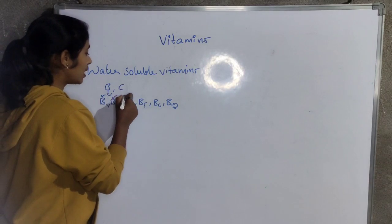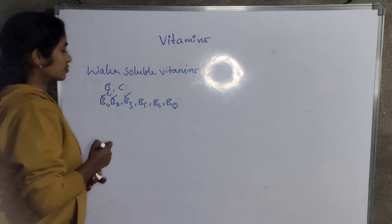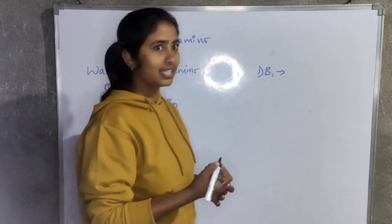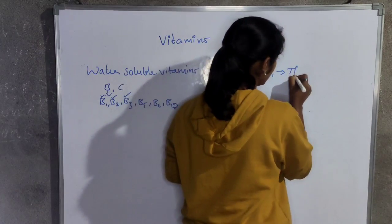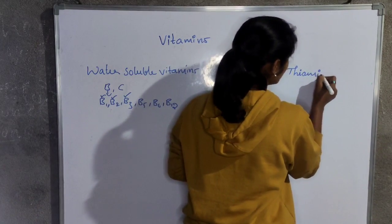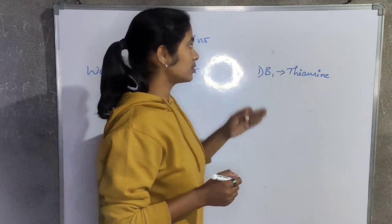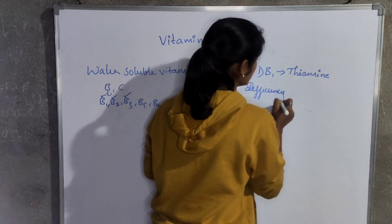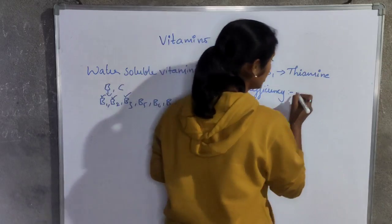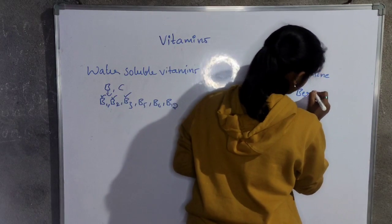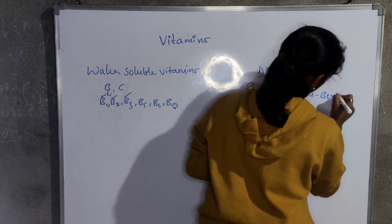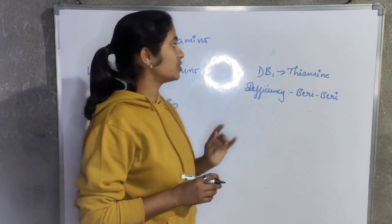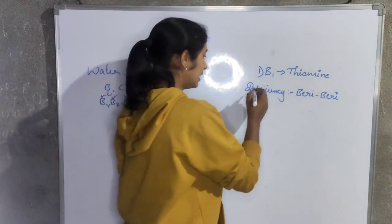Today we are going to discuss B1, B2, and B3 vitamins. First, B1 vitamin — the scientific name or chemical name of B1 is thiamine. The deficiency of B1 causes neurological problems — problems related to the nervous system.